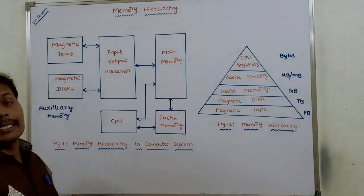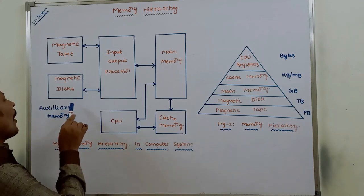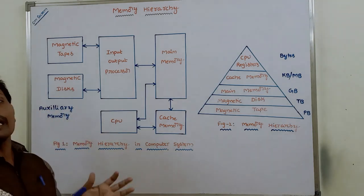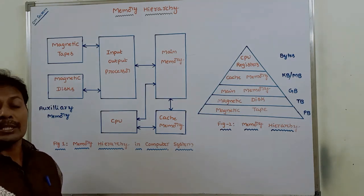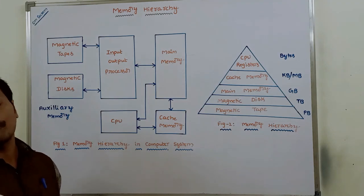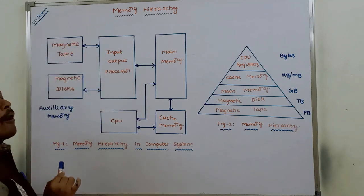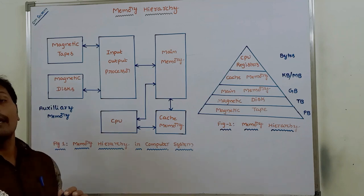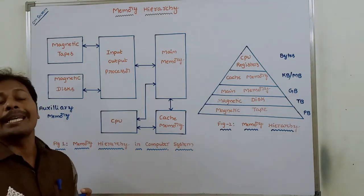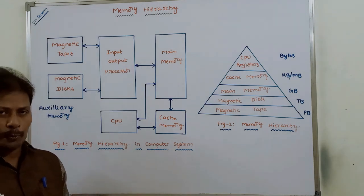Magnetic disk is used for backup storage. Auxiliary memory is mainly used for storing large data files, system programs, and backup storage information. Auxiliary memory has a large storage capacity, is relatively inexpensive, and has a low access speed.